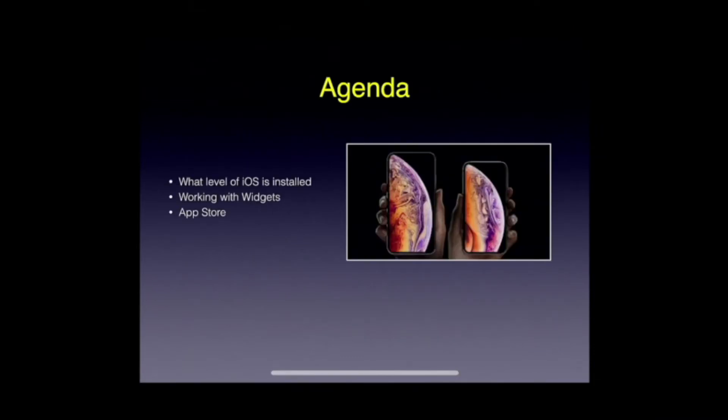The agenda we're going to be covering today is: what level of iOS we're on — we covered this last time but I want to make sure everybody is up to speed. Number two is working with widgets, we'll be talking at length about that. And finally we'll be talking about the App Store — what's in it, how to get things, and how to do updates.